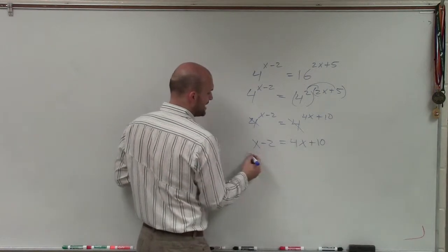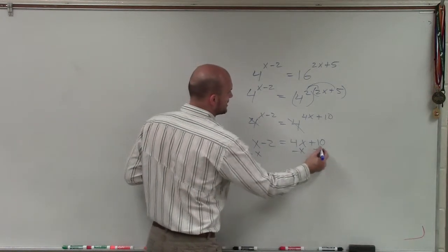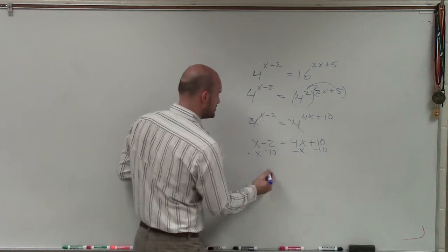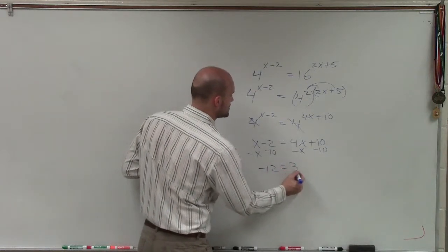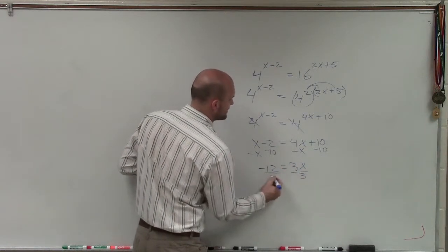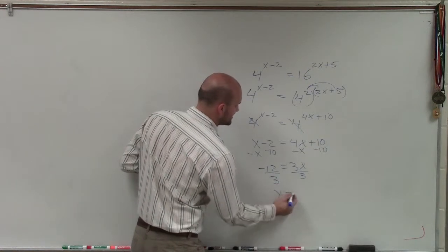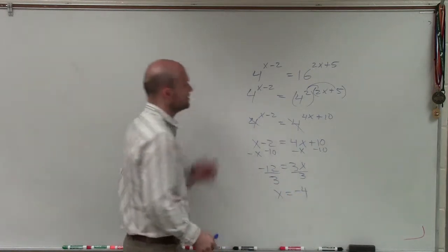So now to solve for x, I'll subtract x and subtract 10 on both sides. Therefore, I have negative 12 equals 3x, divided by 3, x equals negative 4.